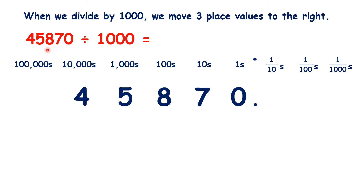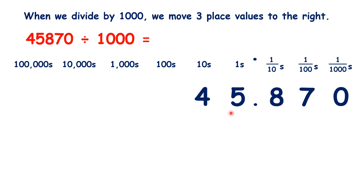Now, what is 45,870 divided by 1,000? Moving three places to the right, we get 45.870, which we can write as 45.87.